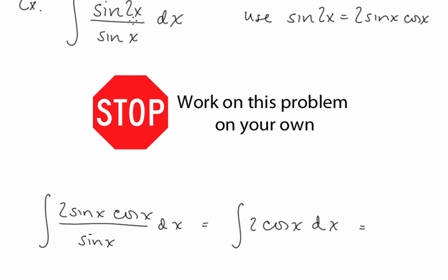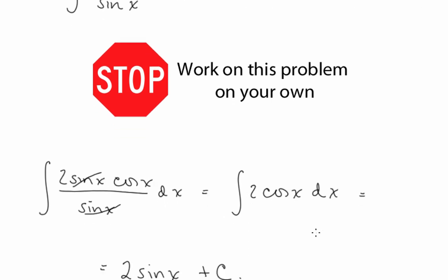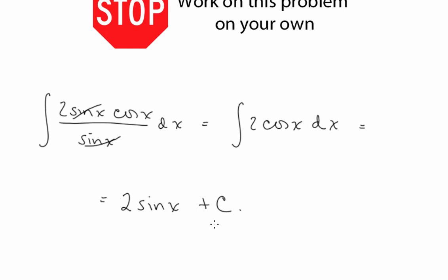So rewriting our sine 2x as 2 sine x cosine x, we realize we can simplify here, and this simplifies to 2 cosine x. Now we can take our antiderivative, that's 2 sine x plus c.